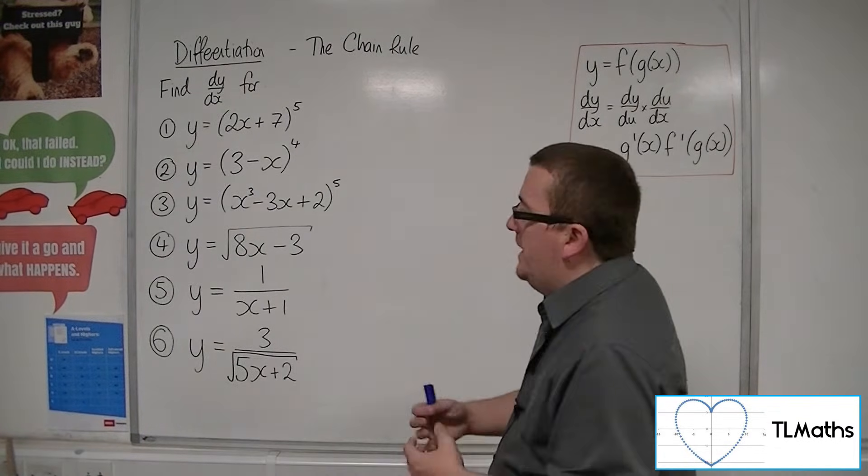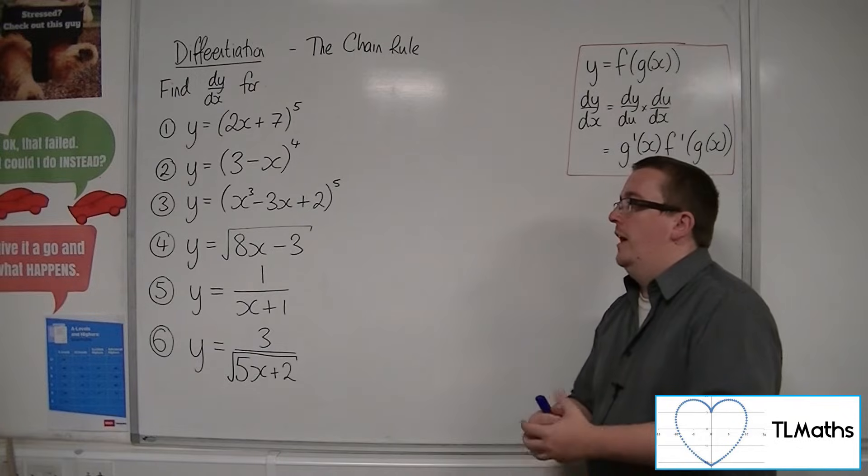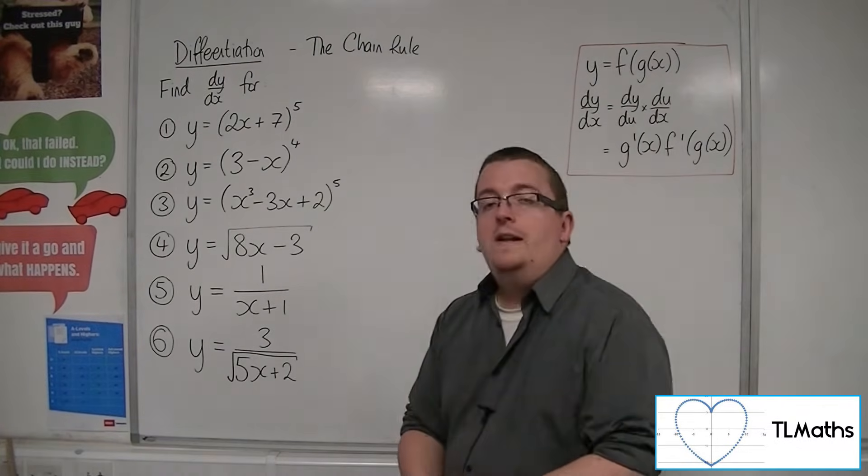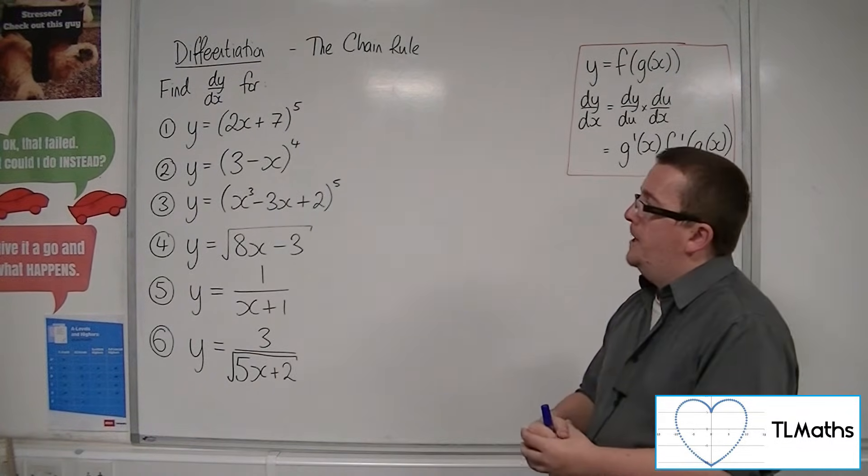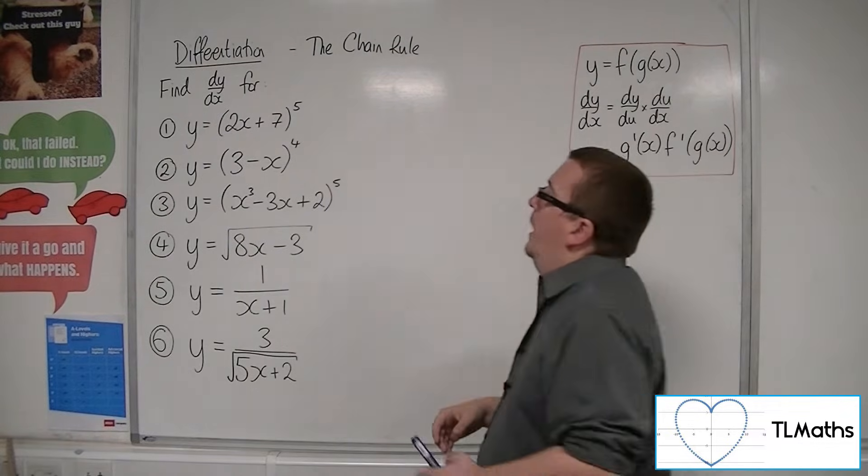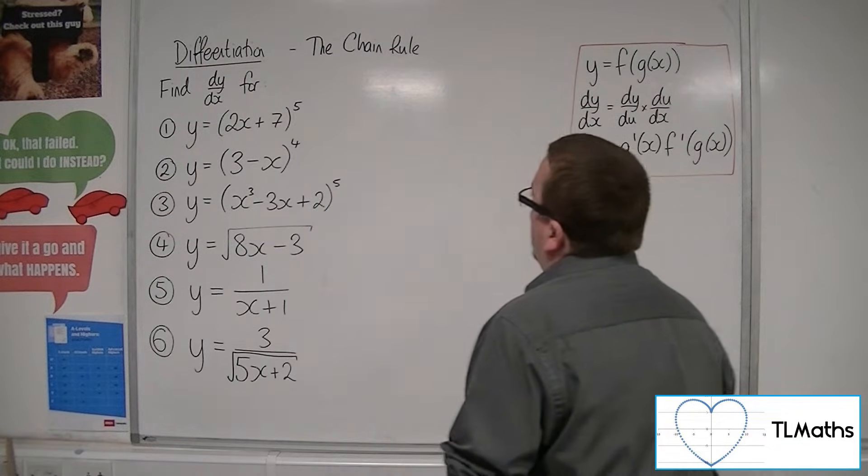But if needs be and you need the practice and there are bits you're not quite sure of, then feel free to write it out in the long way. So we're going to start off with number one, y equals 2x plus 7 to the 5.